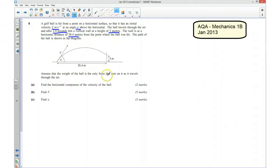Assume that the weight of the ball is the only force that acts on it as it travels through the air, so that means that we can treat this as a projectile. Now, the ball ends up 38.4 metres away horizontally and 3 metres away vertically from where it started and it's taken 2.4 seconds for it to reach there.